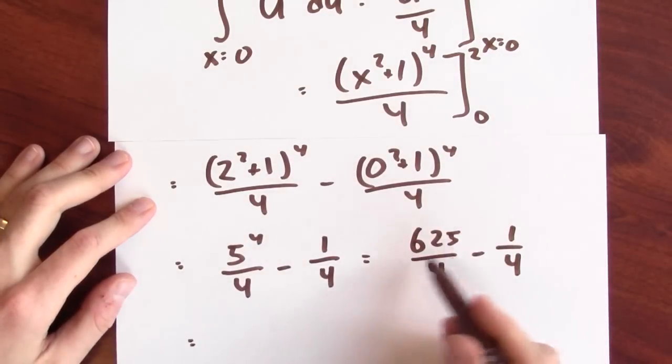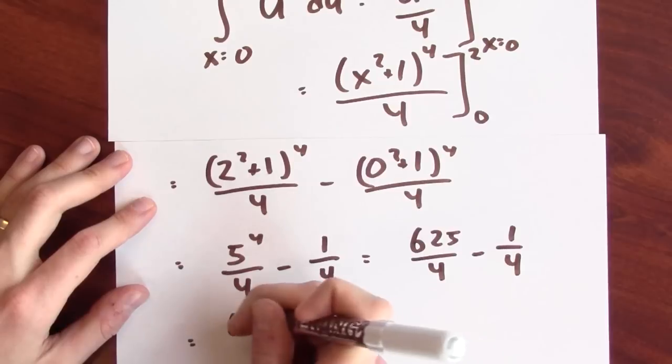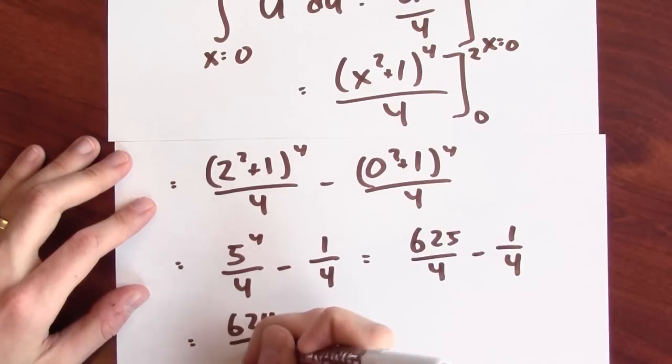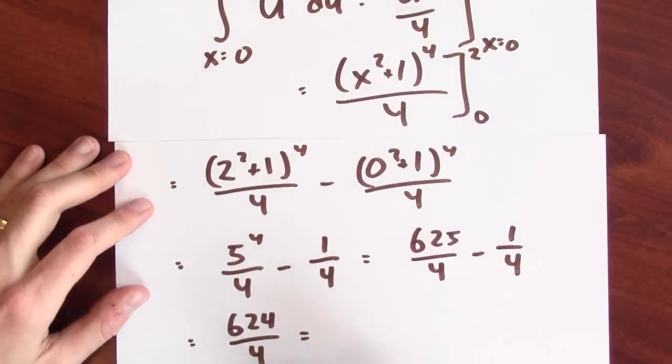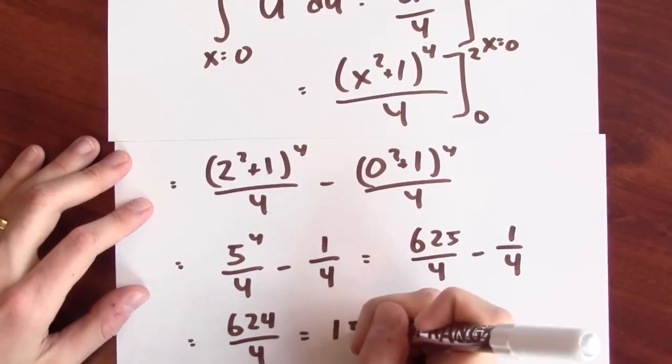And now I can combine these into a single fraction. That's 624 over 4. And that I can simplify a bit. That's 156. We did it!